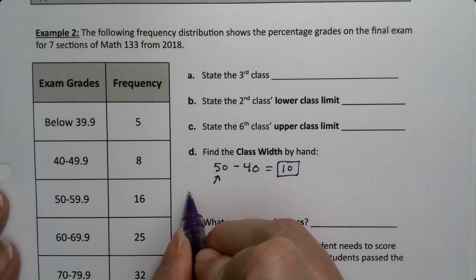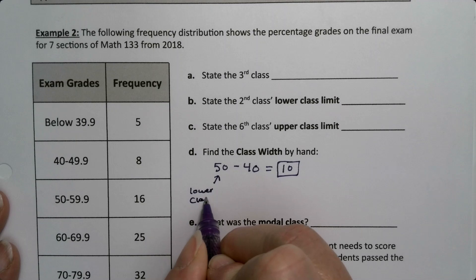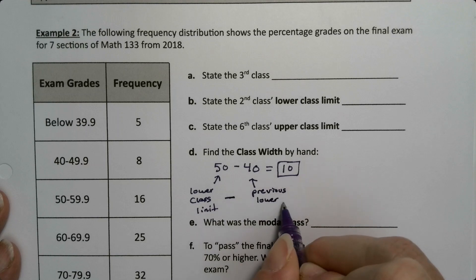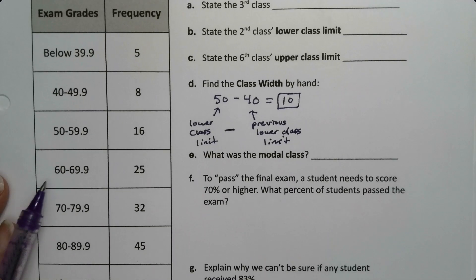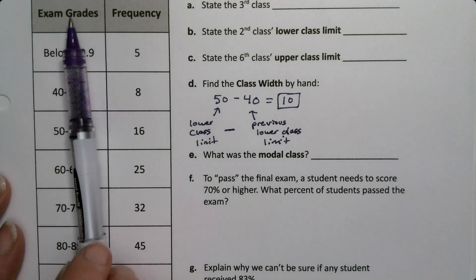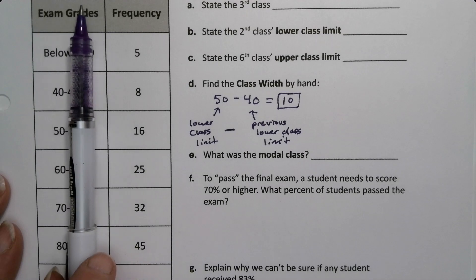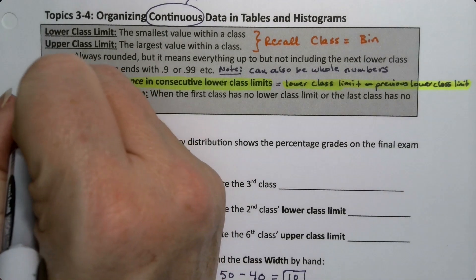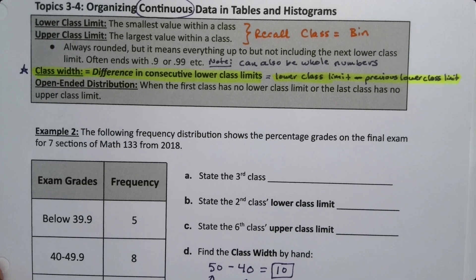So 50 take away 40 is 10. Your class width is 10. You have a lower class limit minus the previous class's lower class limit. There's nothing special about the two classes I picked. I could have done 60 take away 50 is 10, 70 take away 60 is 10. You're taking the lower class limits: the 40, the 50, the 60, the 70, 80, and so on. That's a very important formula.